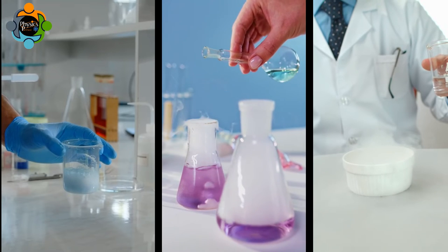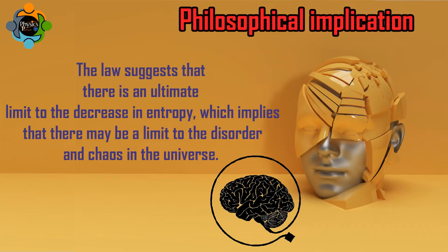In addition to its practical applications, the third law of thermodynamics also has philosophical implications. The law suggests that there is an ultimate limit to the decrease in entropy, which implies that there may be a limit to the disorder and chaos in the universe. This idea has been a topic of debate among scientists and philosophers for many years.